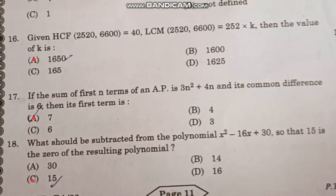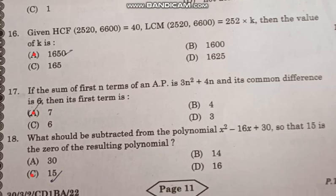Question number 16: Given HCF of 2520 and 6600 equals 42, then 252 times X. The value of K is correct answer option A, 1650.